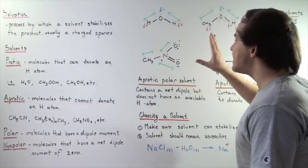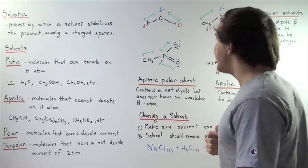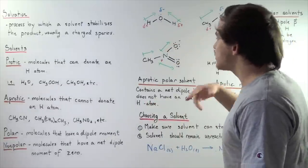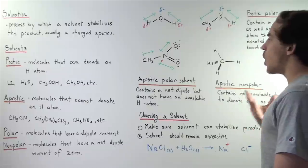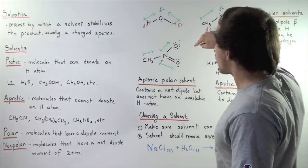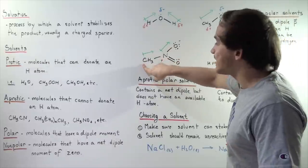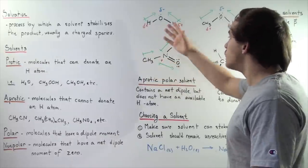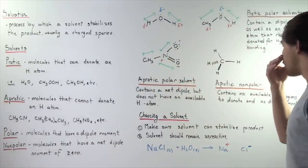So, this is aprotic and it's polar. Notice that oxygen is more electronegative than the N and the N is more electronegative than the carbon. So, that means we're going to have a partial negative charge on this oxygen, a partial positive on this guy and a partial positive on this carbon. So, we're going to have a net dipole moment on this molecule.